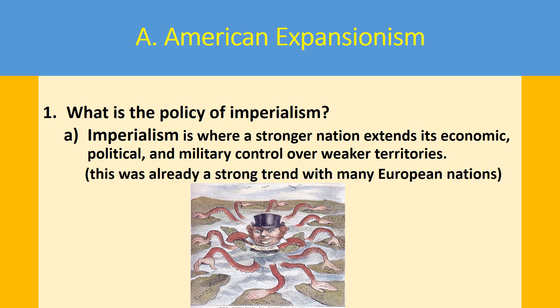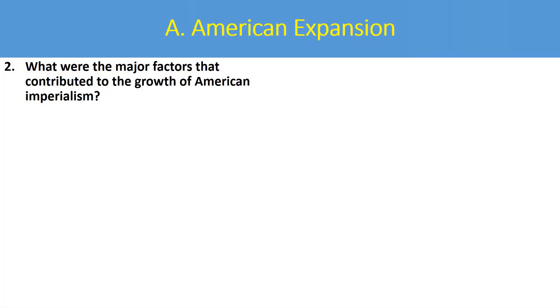But by the 1880s, this was already a strong trend with a lot of other European nations, and everybody felt that if they didn't get in the fray, they were going to be left behind. There were really four major factors that contributed to the growth of American imperialism. The first is global competition.